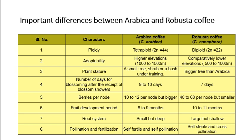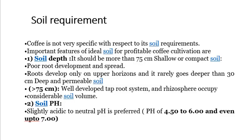Regarding pollination: robusta is self-sterile and cross-pollinated, while coffee arabica is self-fertile and self-pollinated. Soil requirement: coffee is not very specific with respect to soil. Important features of ideal soil are: soil depth should be more than 75 cm, as shallow or compact soil leads to poor root development — roots rarely go deeper than 30 cm. In deep and permeable soil of more than 75 cm, a well-developed taproot system and rhizosphere occupy considerable soil volume. Soil pH: slightly acidic to neutral pH is preferred, from 4.5 to 6 and even up to 7.